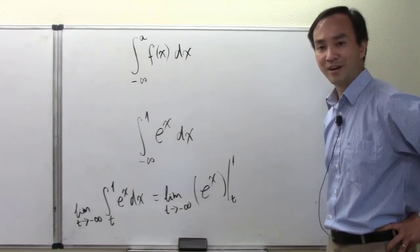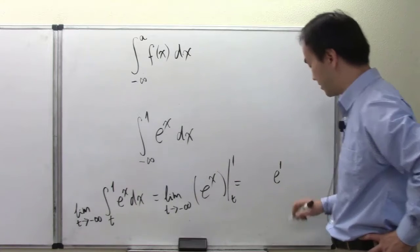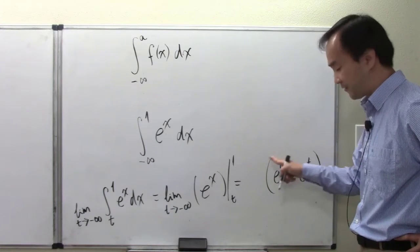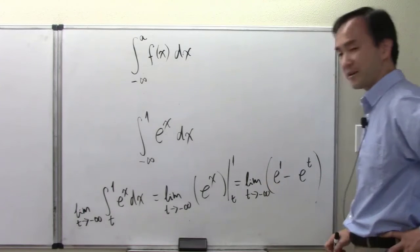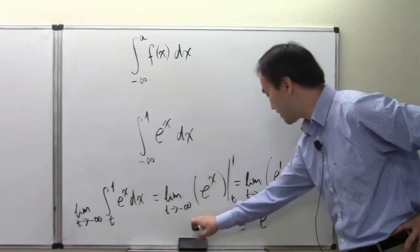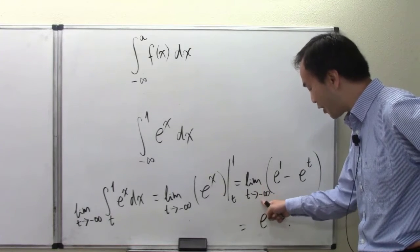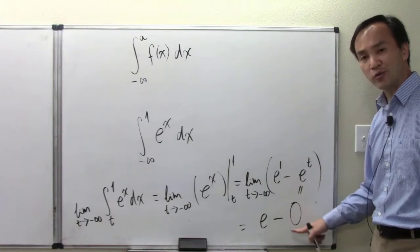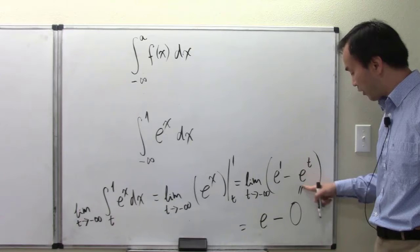After using the fundamental theorem of calculus, substituting one and t: we get e to the first power, minus e to the t. Now I take the limit as t approaches negative infinity. As t grows to minus infinity, e to the t will go to zero.